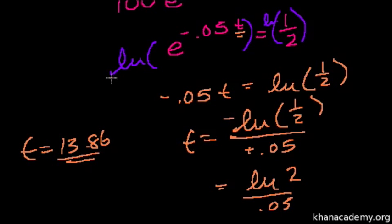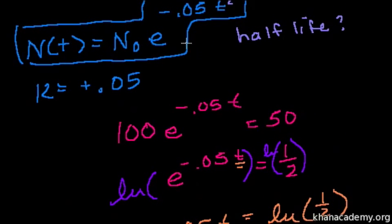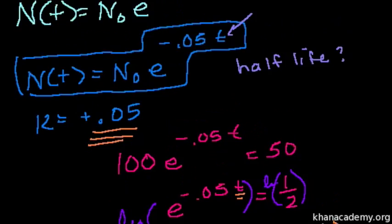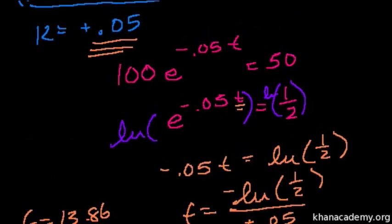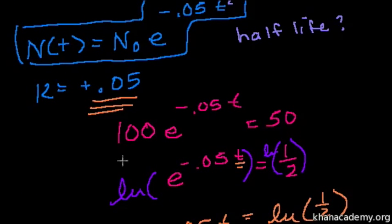So when t equals 13.86, assuming we're dealing with time in years—that's the convention—then I've solved the half-life. After 13.86 years, you can expect to have half the substance left. We started with 100, ended with 50. I could have started with x and ended with x over 2. Let's do one more problem to get really comfortable with the formula.